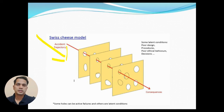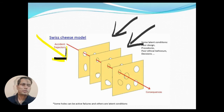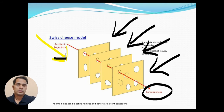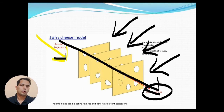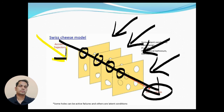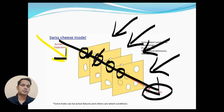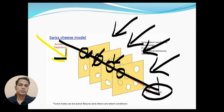As you can see, this is the accident trajectory. These are the various cheese slices, which are called barriers. For any accident or consequence to take place, it has to pass through all of the cheese slices — meaning all the holes have to be in a line. If any one of these holes did not exist, that barrier would have prevented the accident or incident from taking place.